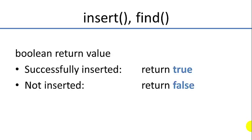Successfully inserting will return true, and if an item is not inserted it will return false. Why would an item not be inserted? Well, a binary search tree does not contain duplicates, so if you're trying to insert an item that's already in the tree, we're going to return false and not insert it.